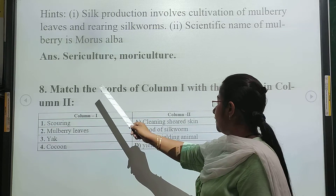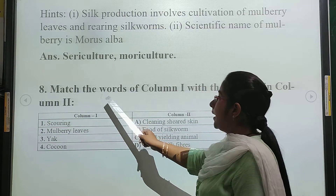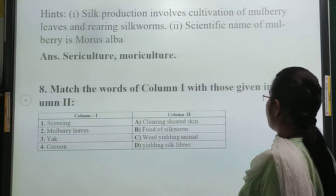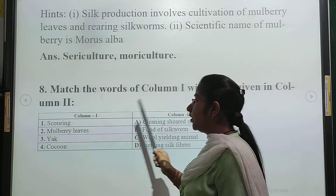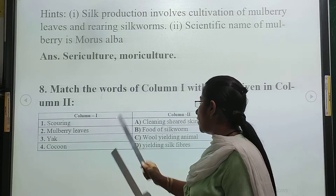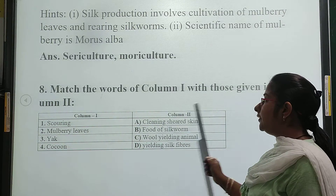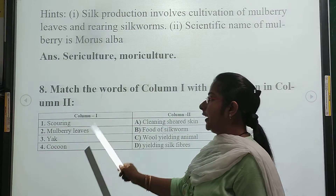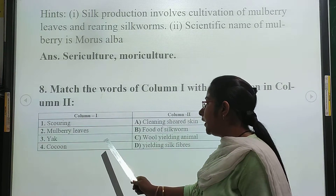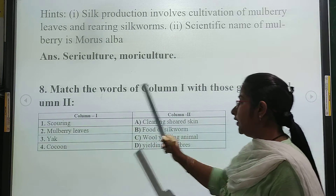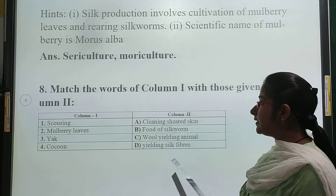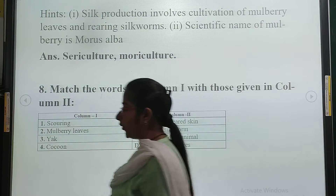Question number 8: match the column one with those given in column two. For example, scouring — the answer matches with cleaning the sheared skin. The silk worm uses mulberry leaves as food, which gives us silk fiber. This is the correct matching for this column.